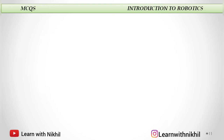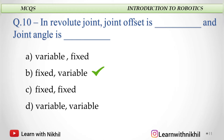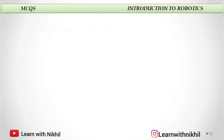Next question: In a revolute joint, joint offset is dash and joint angle is dash. In a revolute joint, joint offset is fixed and joint angle is variable. So it is the opposite of the prismatic joint.